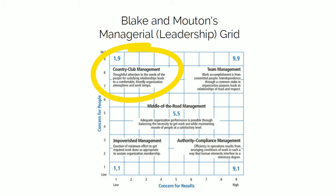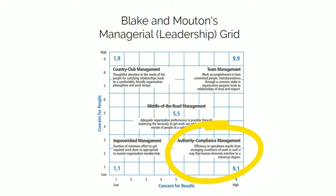At position 1,9, country club management: thoughtful attention to the needs of the people for satisfying relationships leads to a comfortable, friendly organization atmosphere and work tempo. The leader tries to create a positive climate by being agreeable, eager to help, comforting, and non-controversial. At position 9,1, authority compliance management: efficiency in operations results from arranging conditions of work such that human interference is minimal. The leader is seen as controlling, demanding, hard driving, and overpowering.